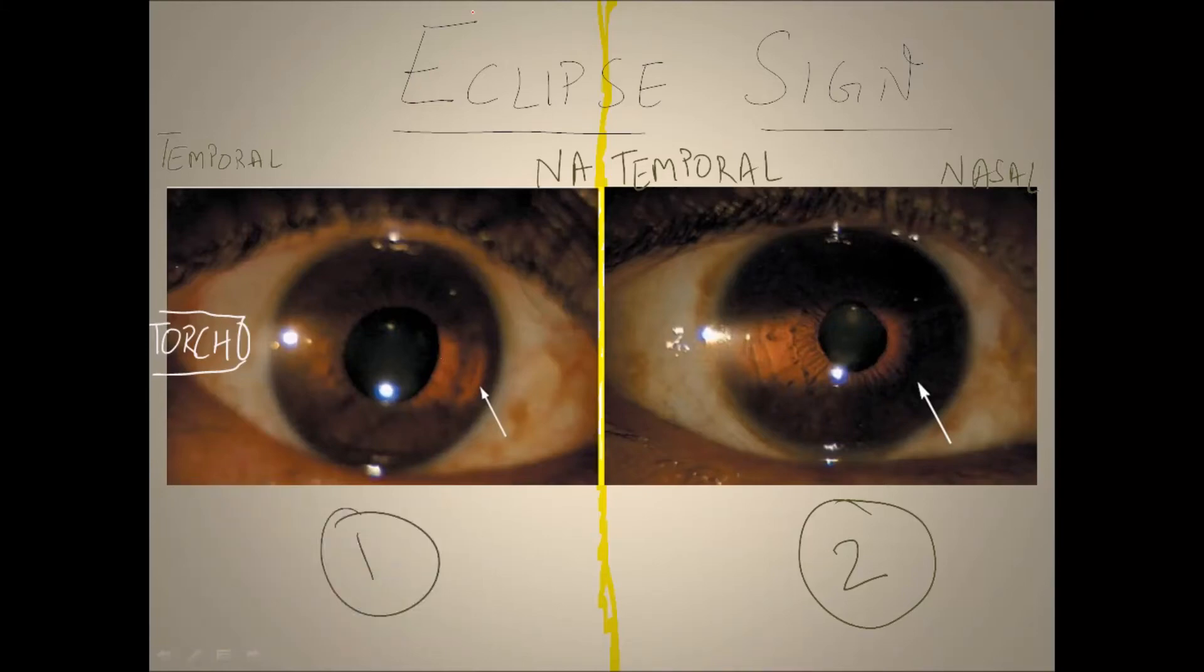Hi, in this video we are going to clear the doubt about the eclipse sign, or as we know it, the oblique flashlight test, and its association with anterior chamber depth. Many of us have confusion about this topic.